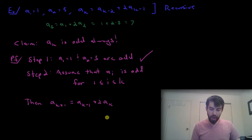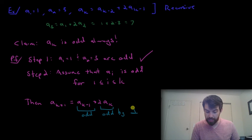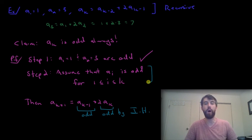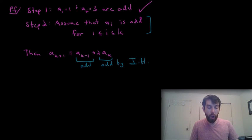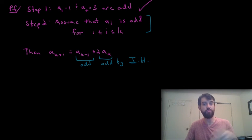However, we know that both of these are going to be odd by our assumption. So this is going to be odd and this is going to be odd and this is true by our induction hypothesis, by this assumption that we have here that all of these previous level ones are going to be odd. So how does that help me?